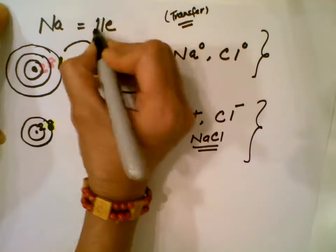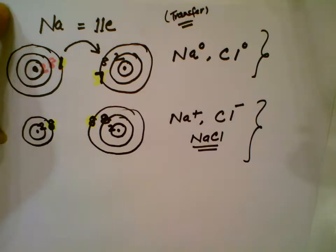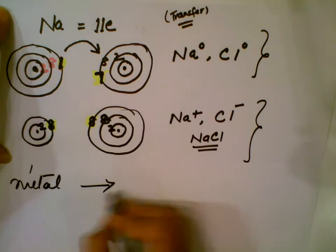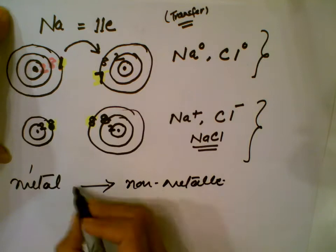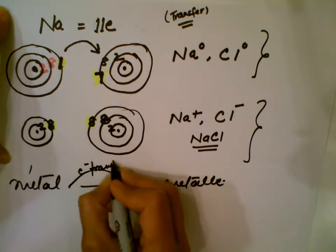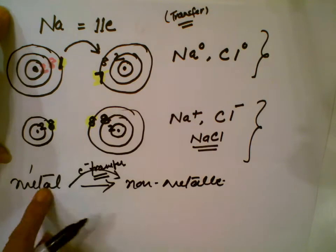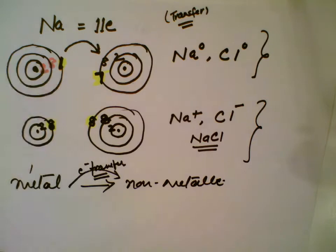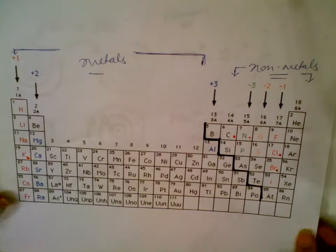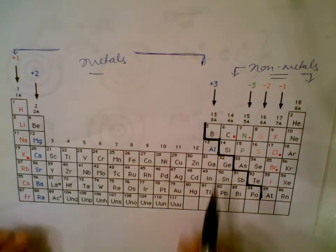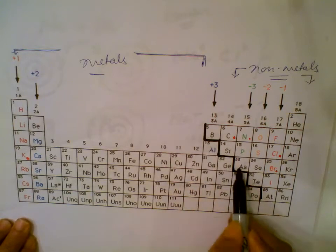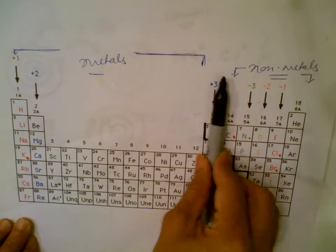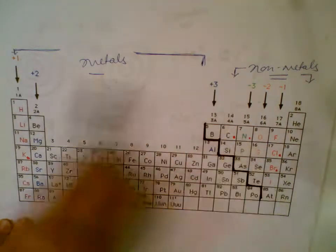Let's check for understanding. Electrons are transferred from a neutral metal atom to a neutral non-metal atom. You can tell from the periodic table which side is metallic and which is non-metallic using the stair step. All elements on the right side of the stair step are non-metals, and all on the left side are metals — metals to the left, non-metals to the right.